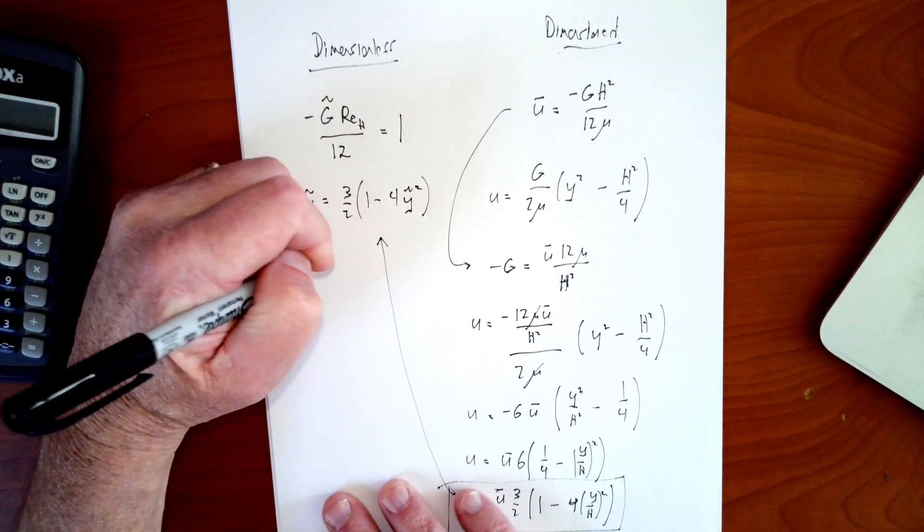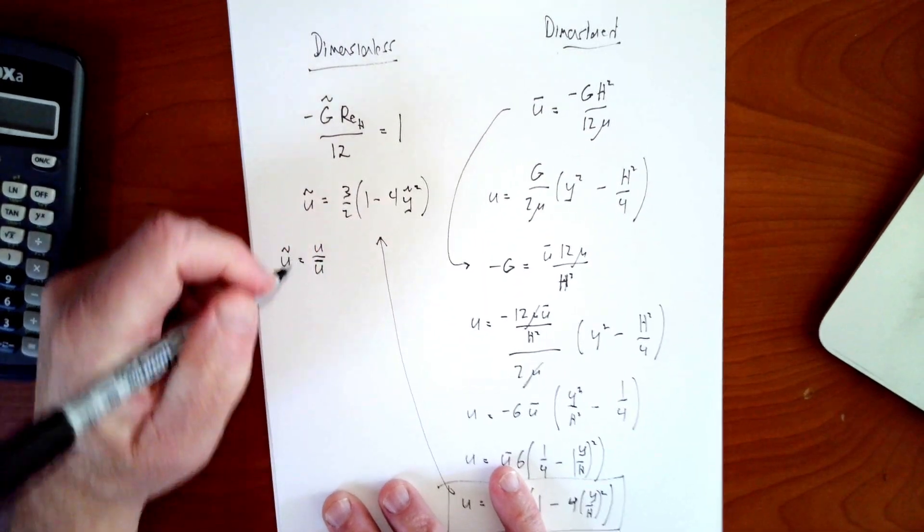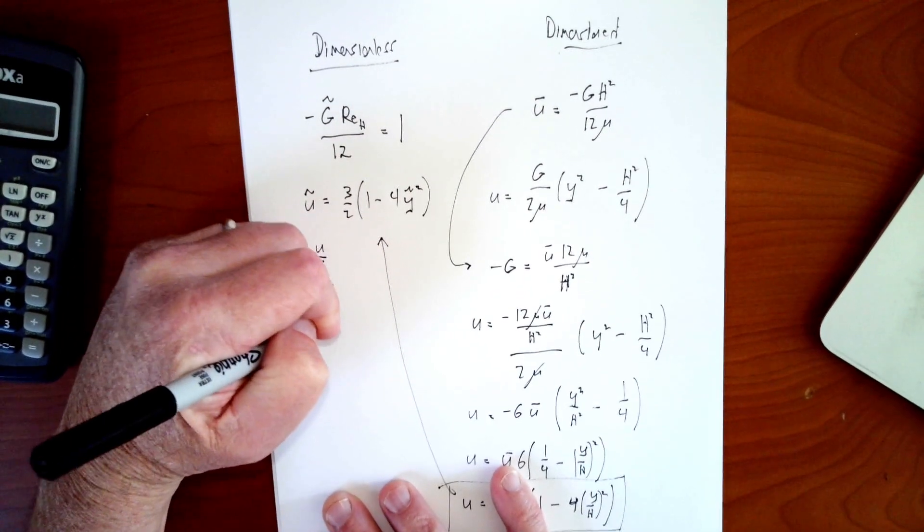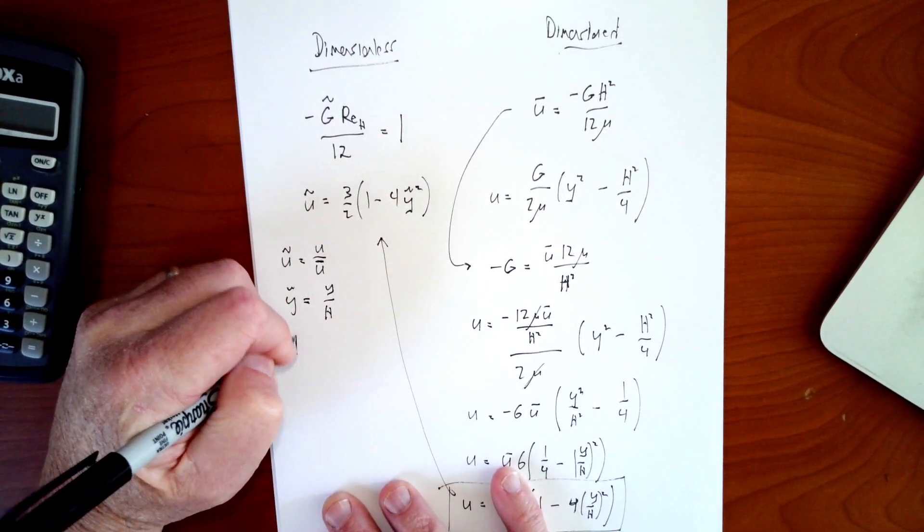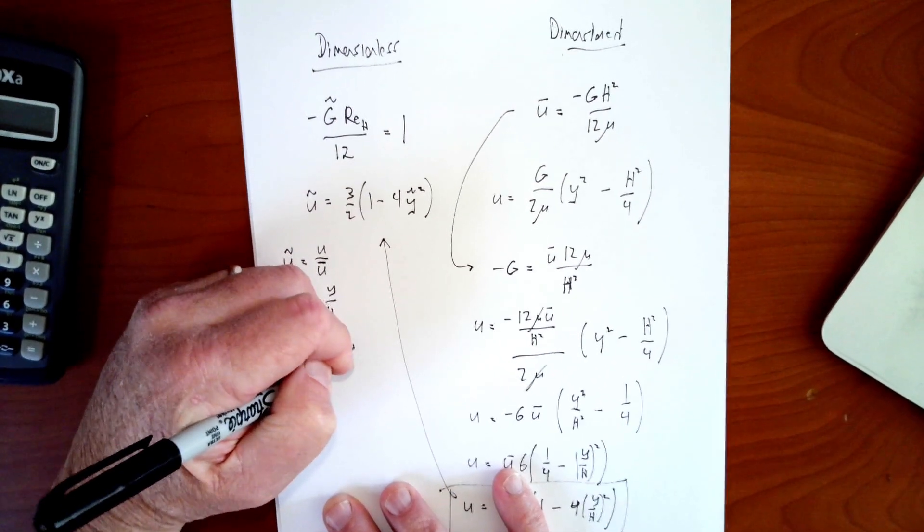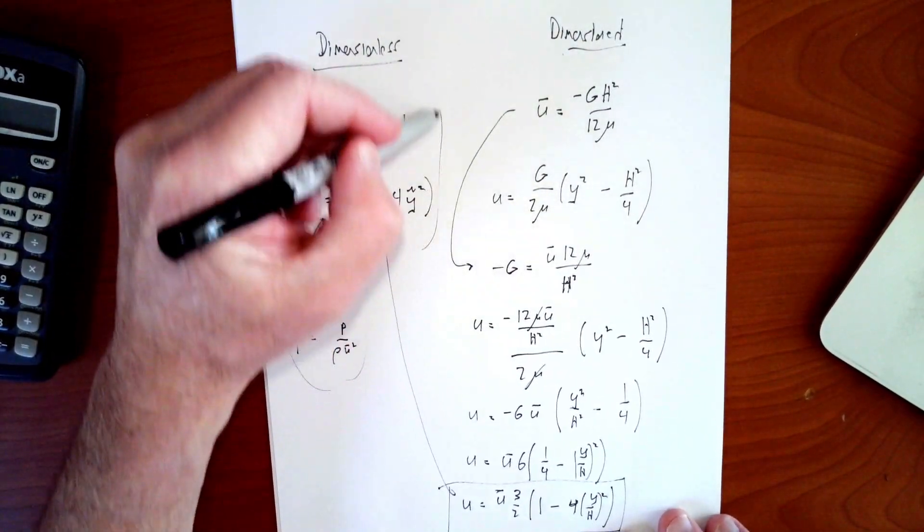Finally, we'll just remind ourselves what the definitions are over here. This is assuming you've chosen the u bar as your characteristic velocity for the problem. Of course, you've chosen h as your characteristic length scale for the problem. And as we've said, for your dimensionless pressure, you've chosen p over rho u bar squared. So these are the three definitions that have to be used in order to use these two equations.